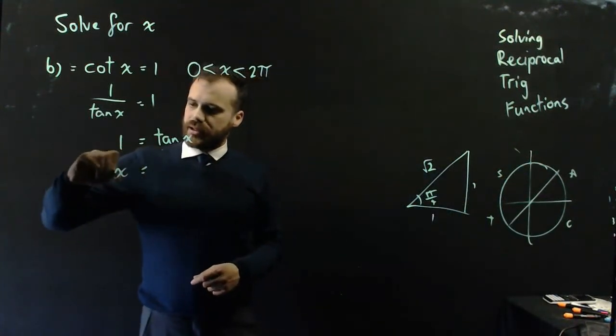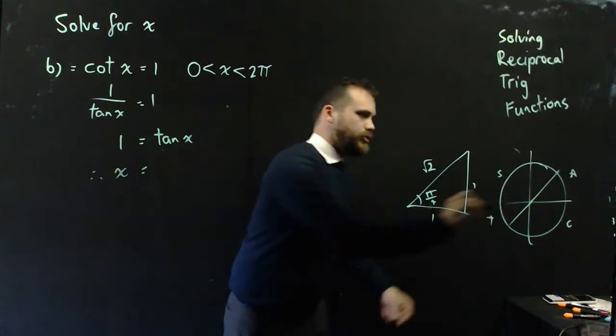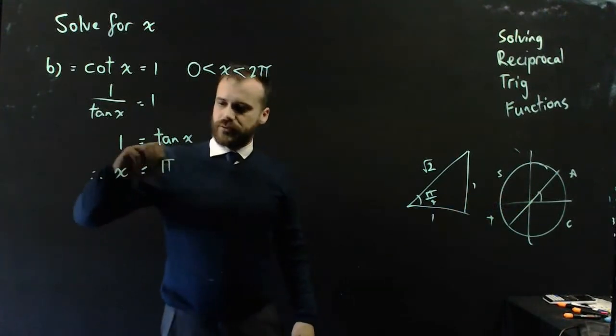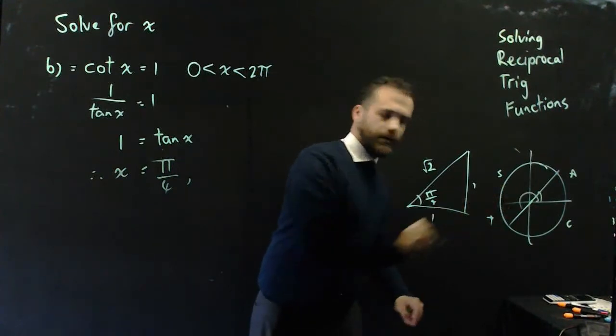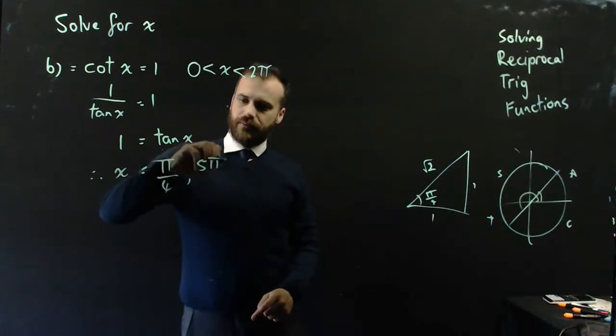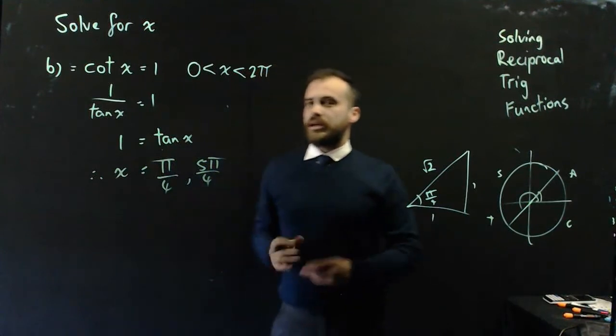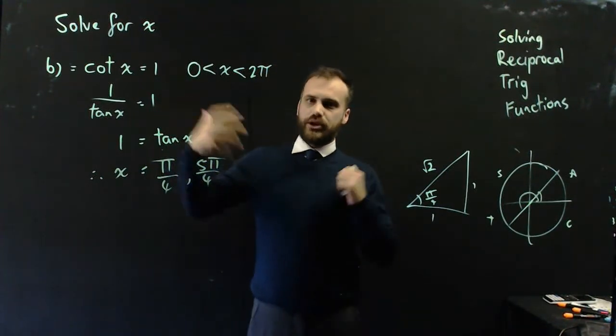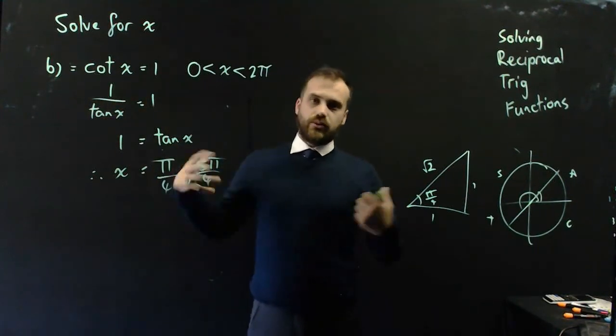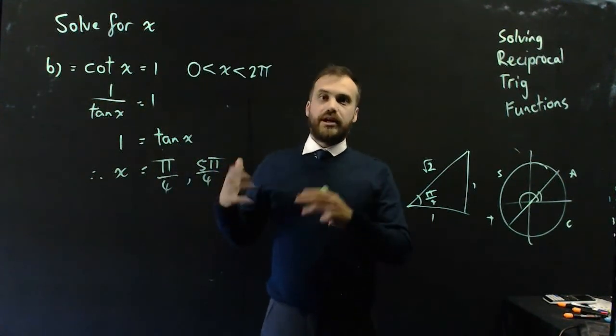So, that means that x is going to be equal to this angle, pi on 4, or this angle, 5 pi on 4. Okay, so, really straightforward with reciprocals. You've just got to know which reciprocal is which. Write it as 1 over that, and then rearrange. Solve, solve, done.